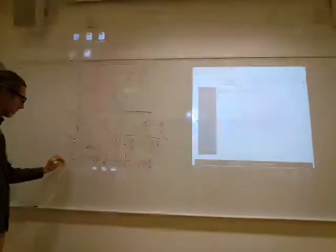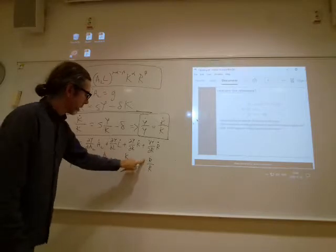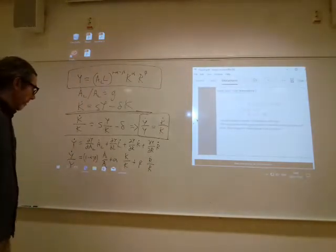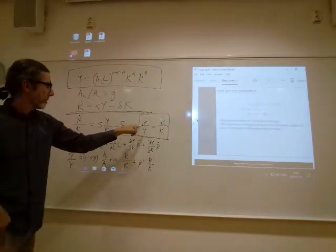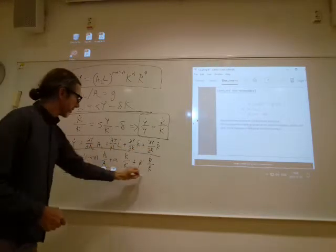Now, let's just divide through by Y, and we have Y dot over Y is that. Okay, now we're getting somewhere. Now, K dot over K is the same as Y dot over... So, this applies anywhere, not just on balanced growth.